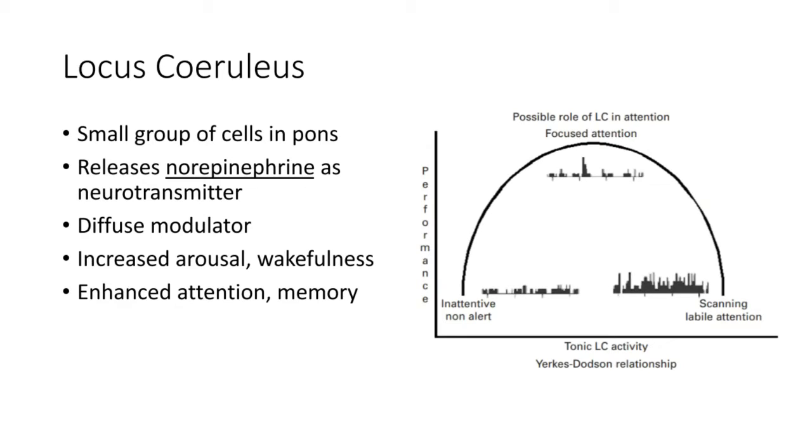The locus coeruleus. This is a small group of cells in the pons. This is one of the brain regions that subserves the diffuse modulator system. So this is one diffuse modulator, there are some other ones, cluster of cells that release serotonin and cluster of cells that release dopamine. The cells here release norepinephrine.